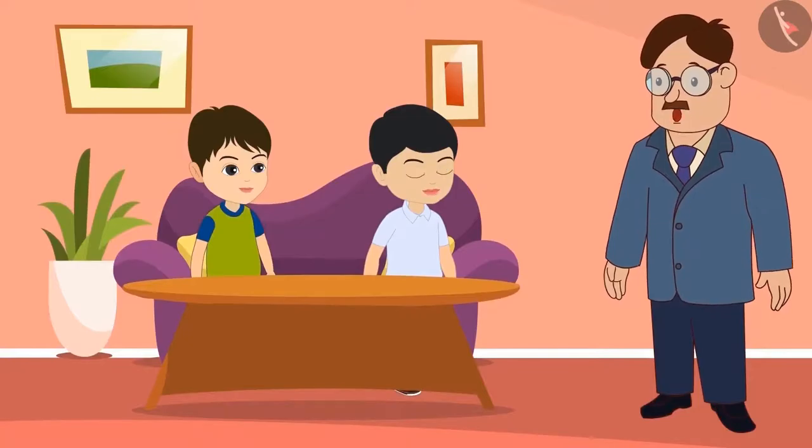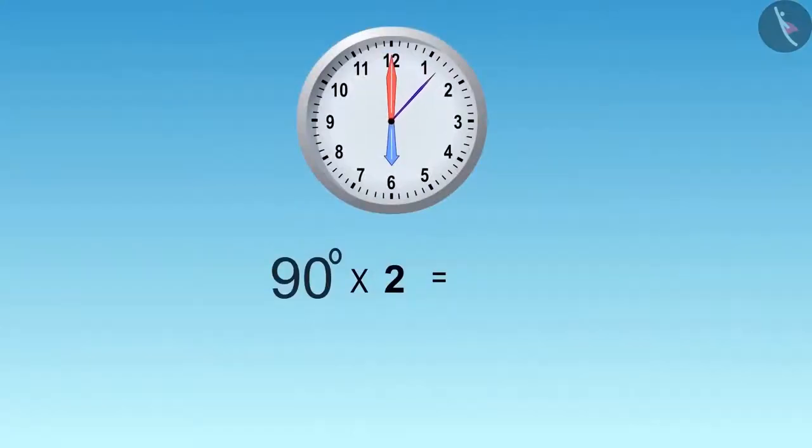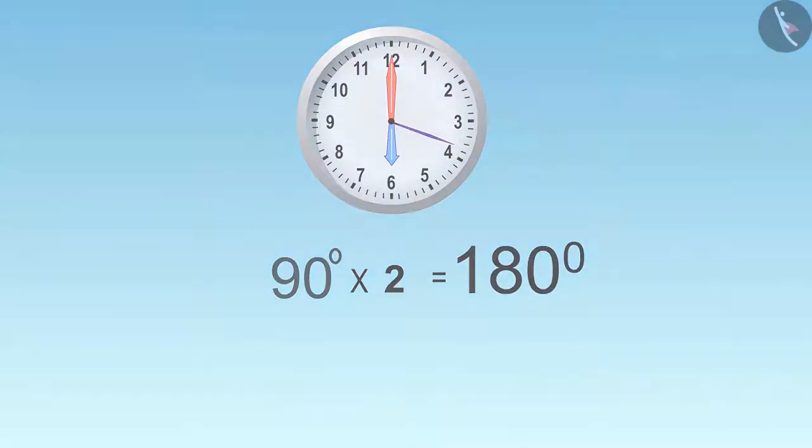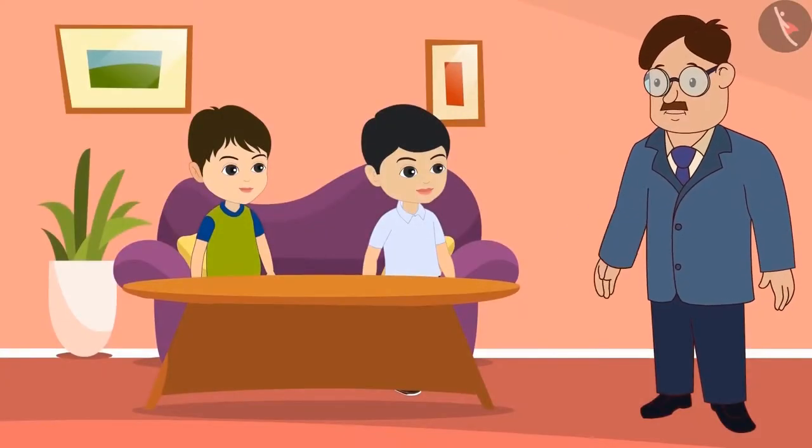Okay, children, can you tell now what is the double of ninety degrees? Uncle, double of ninety is one hundred eighty degrees. Absolutely correct, Golu.